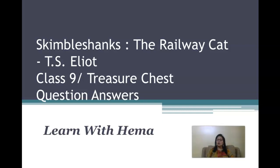Let's quickly start with 'Skimble Shanks the Railway Cat' by T.S. Eliot — question and answers from the Treasure Chest. I am going to provide answers from the Evergreen workbook. The very first multiple choice question is: who is the speaker in the poem? The four options are: the poet, one of the passengers on the train, all the passengers, or the cat.